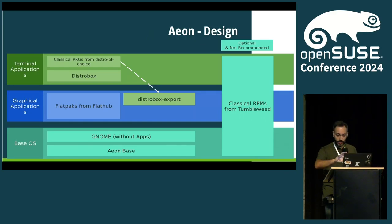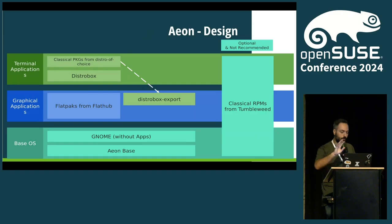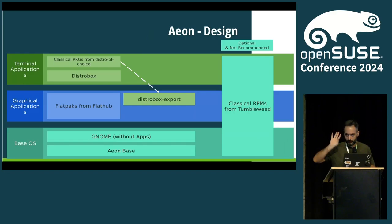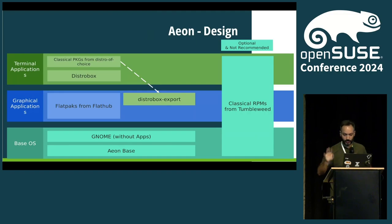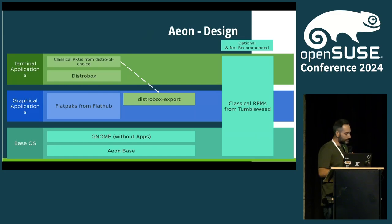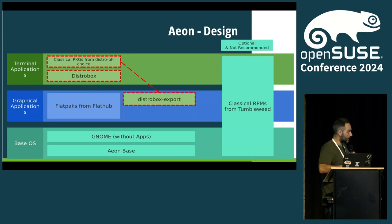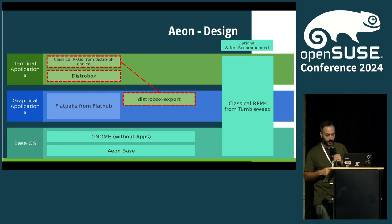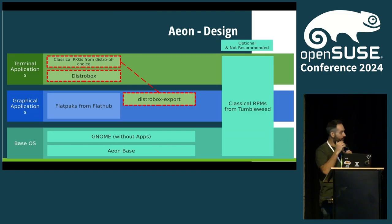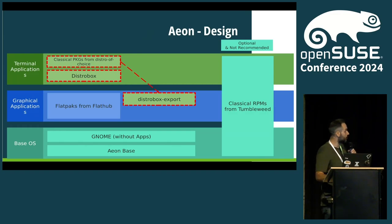The design of Aeon has a base OS based on MicroOS with GNOME, without any apps, because everything is added as Flatpaks by default. You can still use classic RPMs for very edge cases, though it's not advised. Graphical applications come from Flatpaks, and terminal applications come from DistroBox. But for apps that don't have a Flatpak or where Flatpak isn't the best solution, there is DistroBox export, which lets you have GUI apps highly integrated with your environment even though they're running in a container.